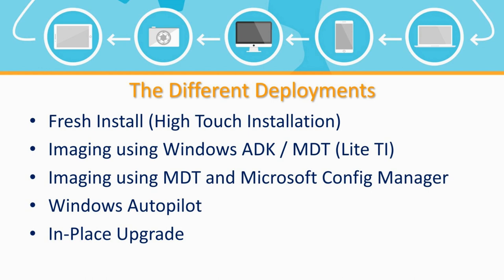The first option is the good old-fashioned fresh install, also called a high-touch installation or high-touch deployment. This basically means taking a copy of Windows on a flash drive or DVD, popping it into a computer, booting off that flash drive or DVD, and installing Windows fresh on the computer — wiping whatever's on the hard drive.